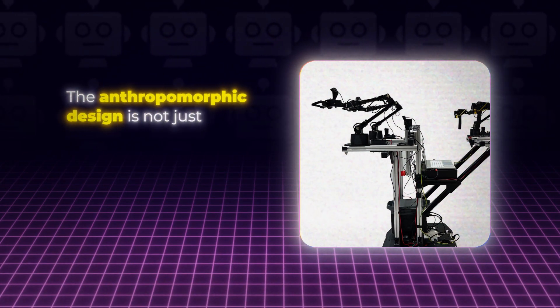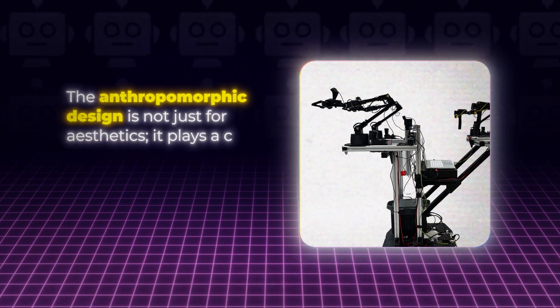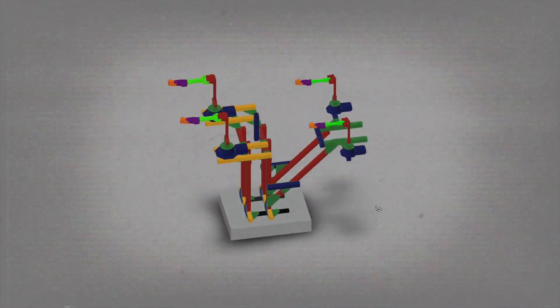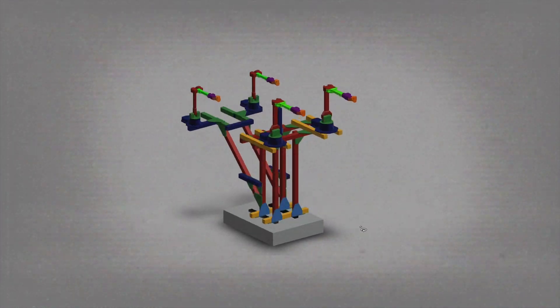The anthropomorphic design is not just for aesthetics. It plays a crucial role in enhancing the robot's adaptability to human-centric environments. It also has a mobile base, enabling it to move around and perform tasks in different locations.